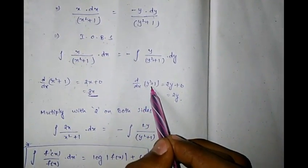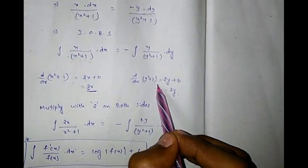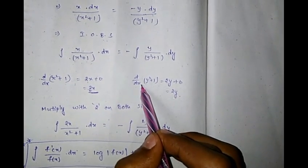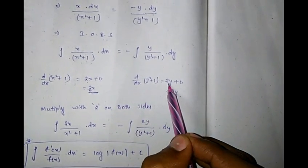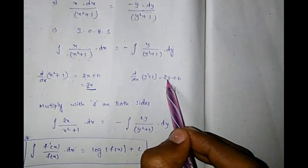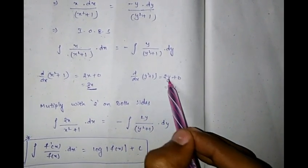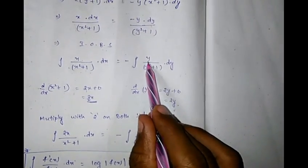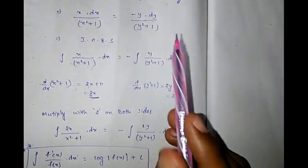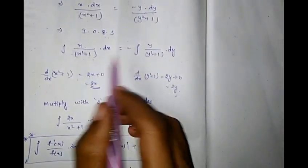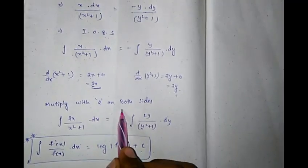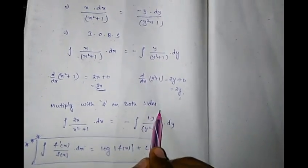Using the formula: d/dx(x²+1) = 2x, and similarly d/dy(y²+1) = 2y. So we multiply both sides by 2 to apply the log formula ∫f'(x)/f(x) dx = log|f(x)| + c.